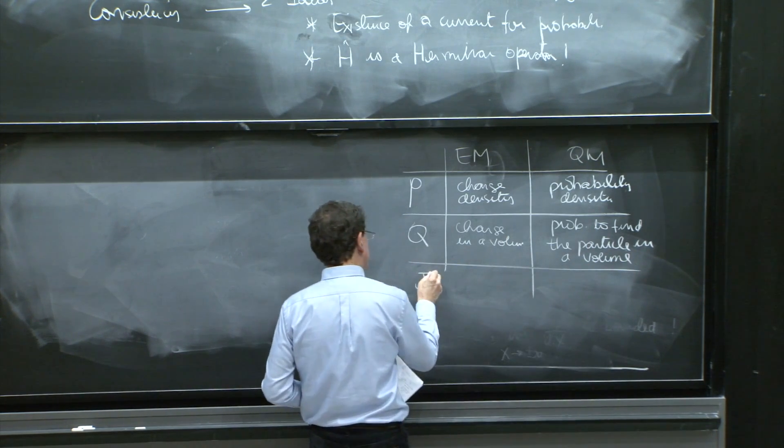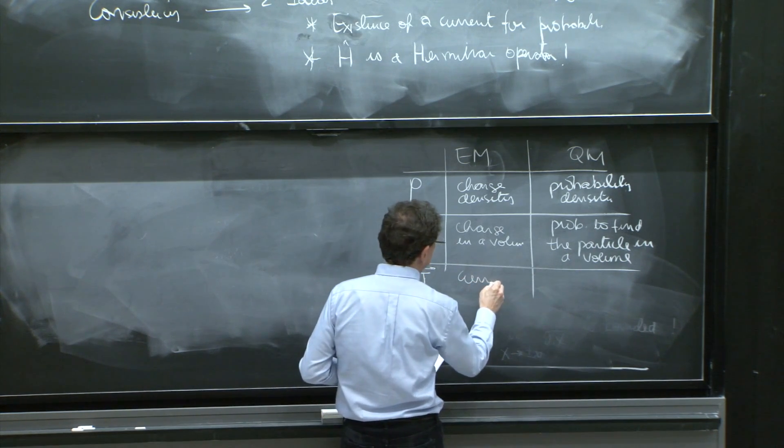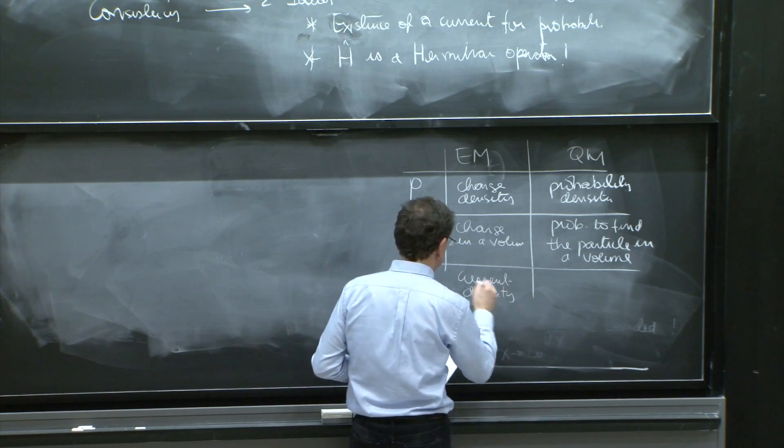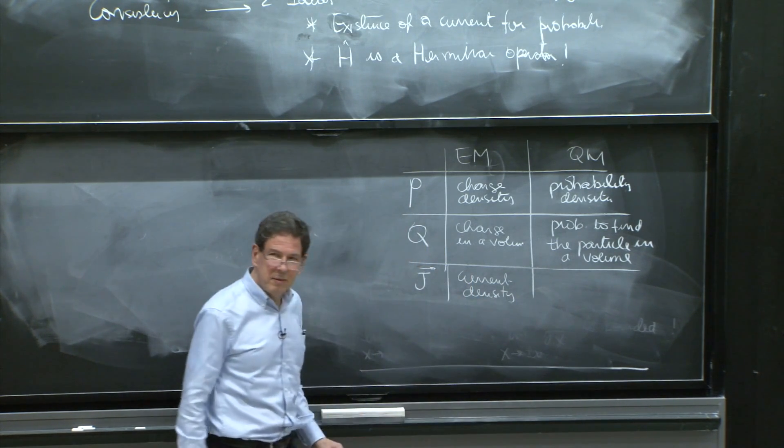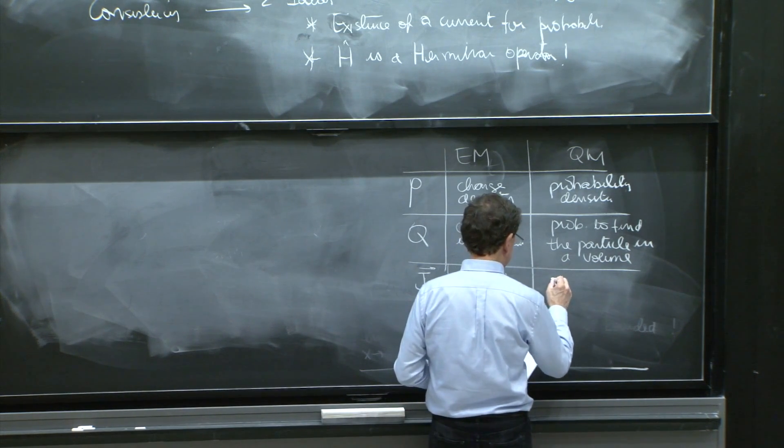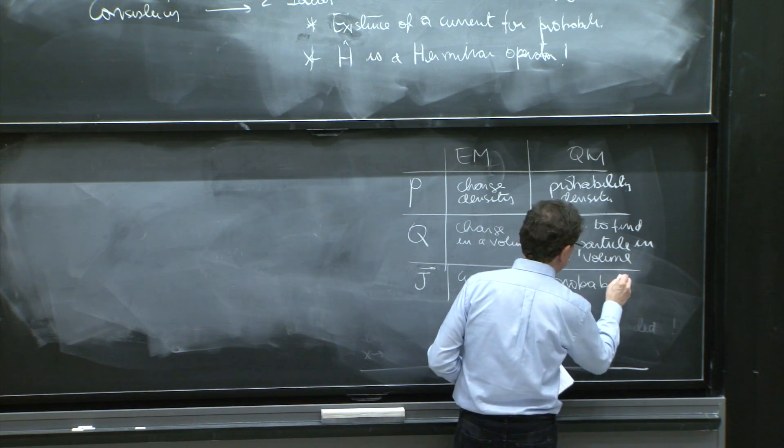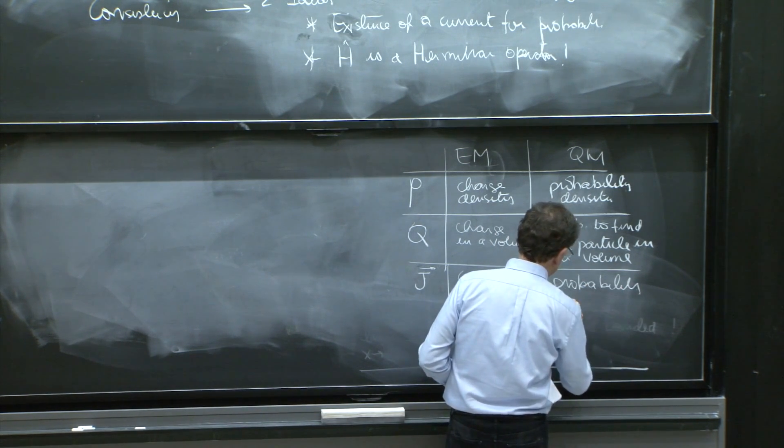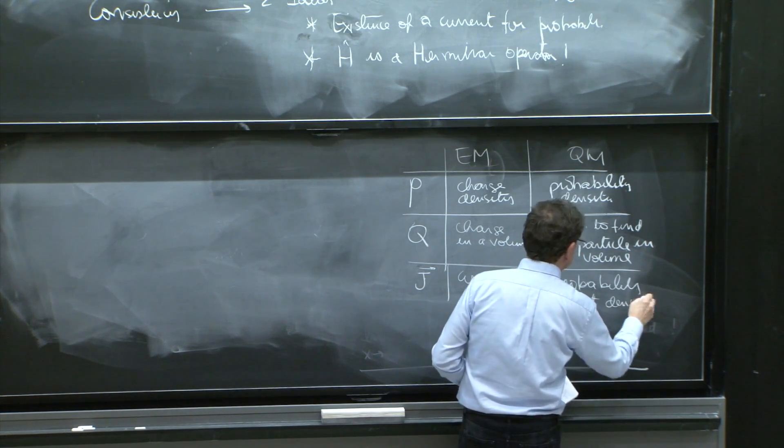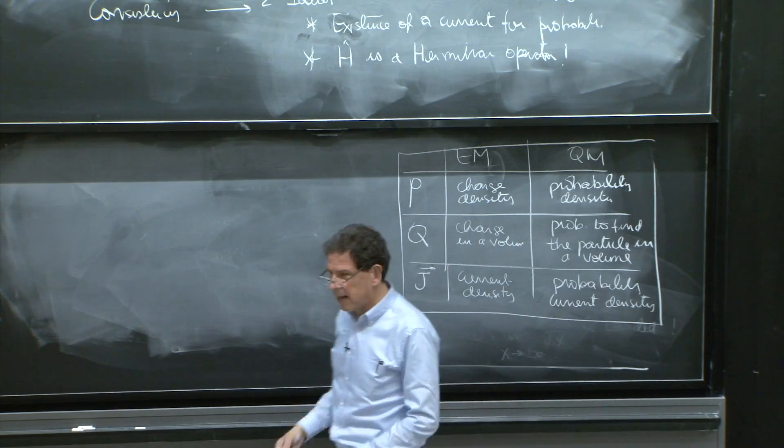There's a j in Maxwell's equations as well. And that's a current density. Ampere's law has that current. Generates the curl of b. And here's the probability current density. And here is the probability current density. Probability current density. So, that's the table.